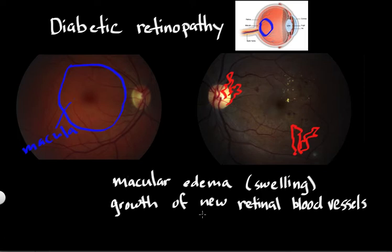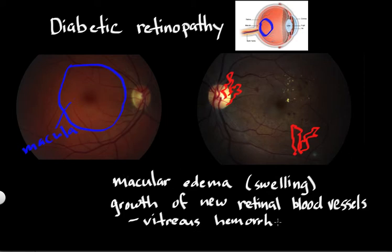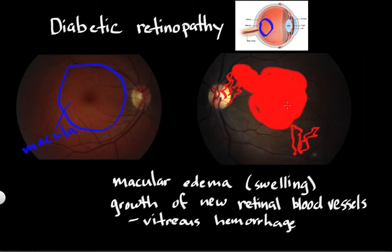One of the complications from the growth of new blood vessels in the retina is vitreous hemorrhage. Because these new blood vessels are fragile, they can bleed into the eye and the eye can get full of blood. Imagine a situation where these new blood vessels start to bleed and ooze — all of a sudden your entire retina is covered by a layer of blood. The vitreous refers to this cavity of the eye; in front of the retina, there is a space where normally there is vitreous gel, but if that space gets full of blood, the eye isn't going to see light very well.